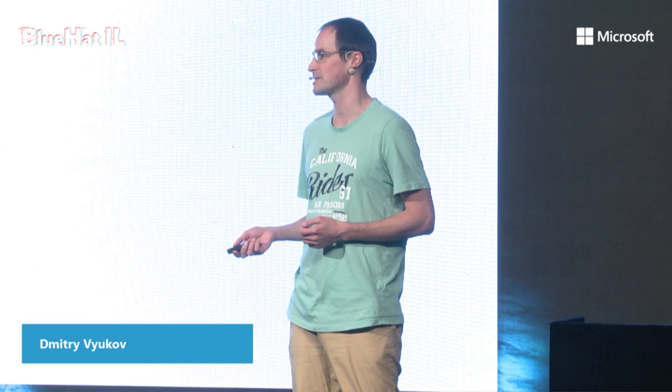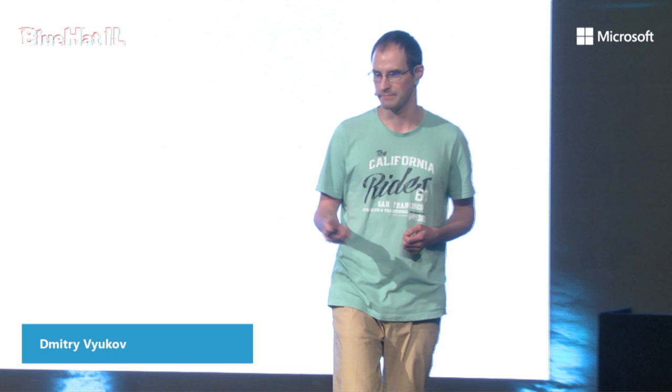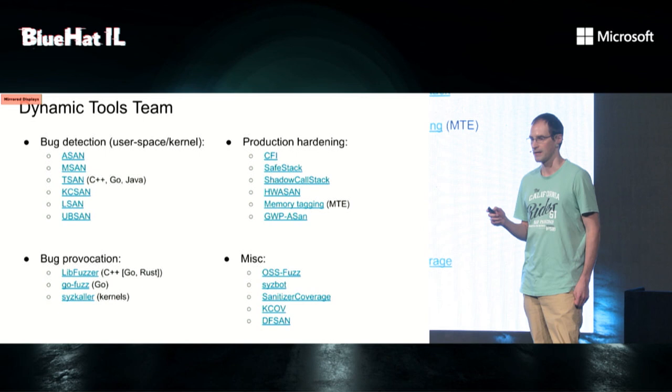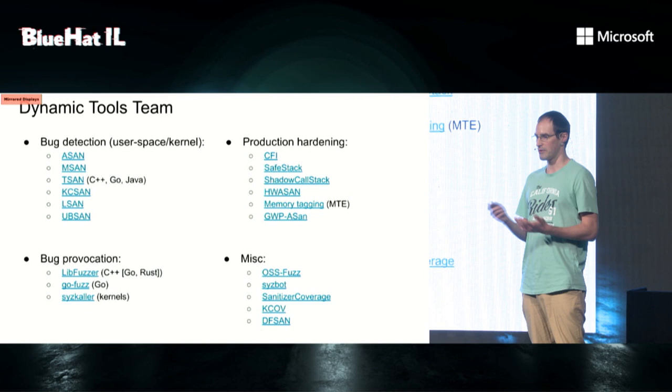I work at Google in the dynamic tools team, and we do a set of tools. We also do some bug provocation tools, in particular LibFuzzer, GoFuzz, and SysColor, and also some fuzzing automation and coverage tools. Some of them are older, and some are pretty new — for example, GWIPA Sun and KEC Sun are our latest hotness, so maybe you want to check them out later.